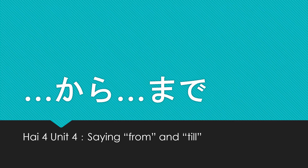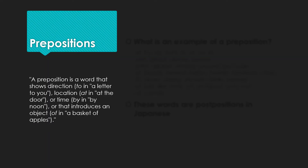But before we move on, we have to first understand the grammatical concept behind words like 'from' and 'till'. In English grammar, when we talk about words like from and till, we are dealing with a concept called prepositions.